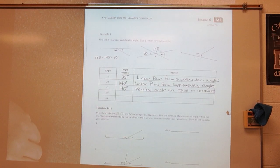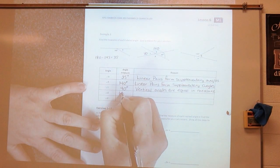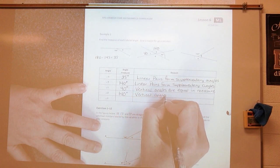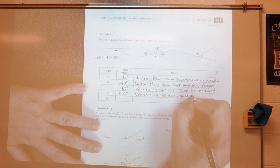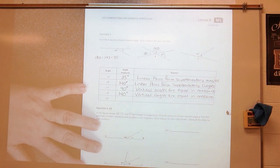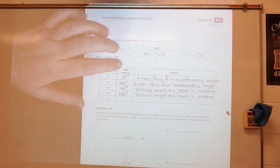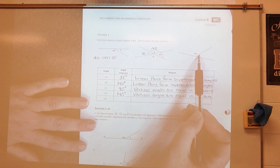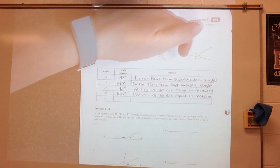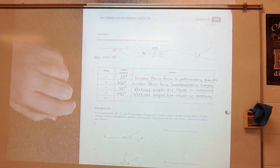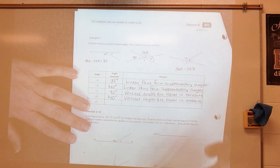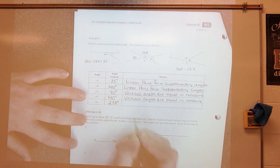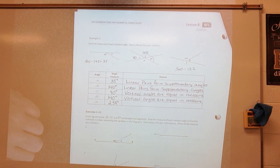Now I can find the measure of angle D because angle B and angle D are vertical angles, so angle D is 140 degrees — vertical angles are equal in measure. Moving on to angle E: these angles come together at a point, so I know it's 360 degrees. So 360 degrees minus 122 would give me 238, because angles at a point sum to 360 degrees.